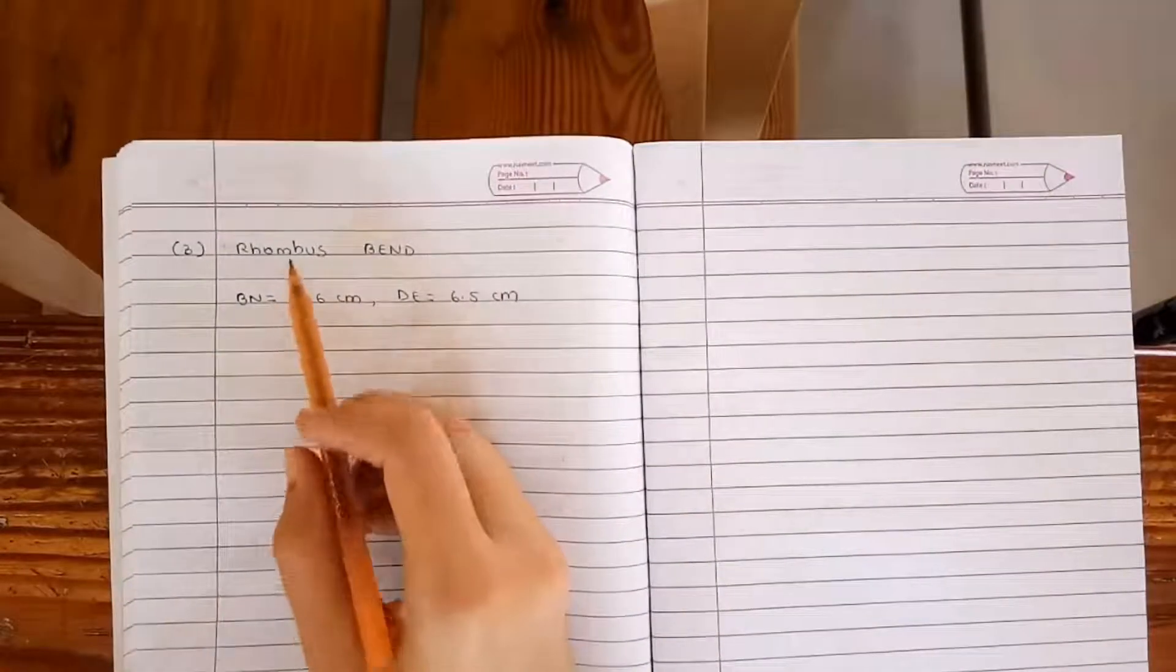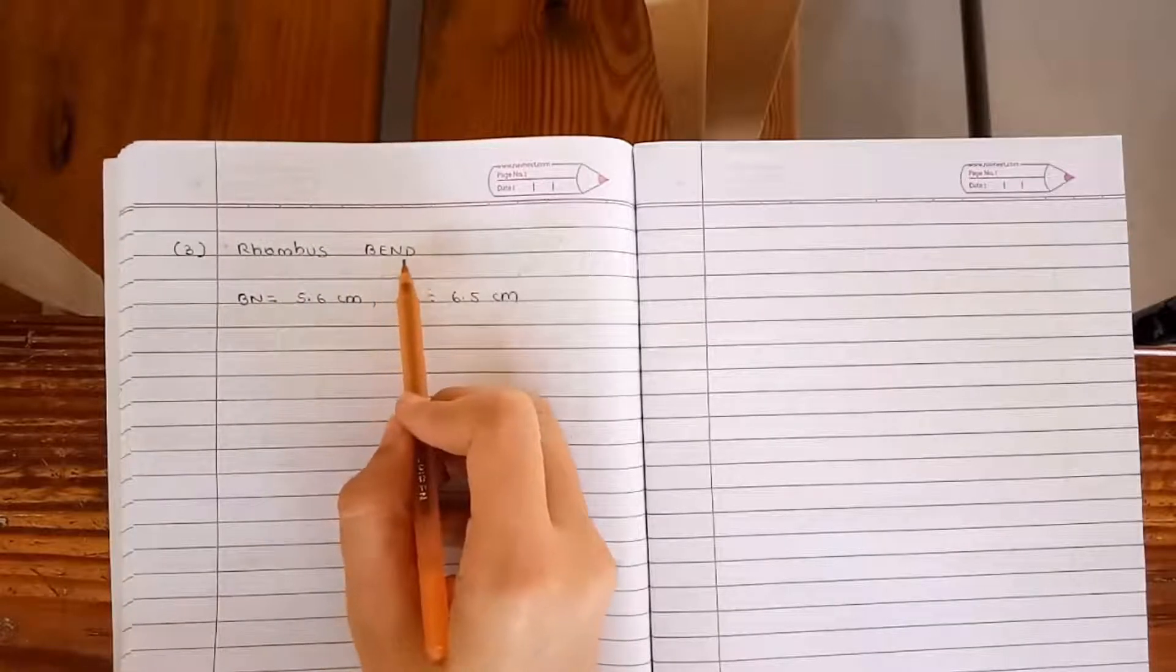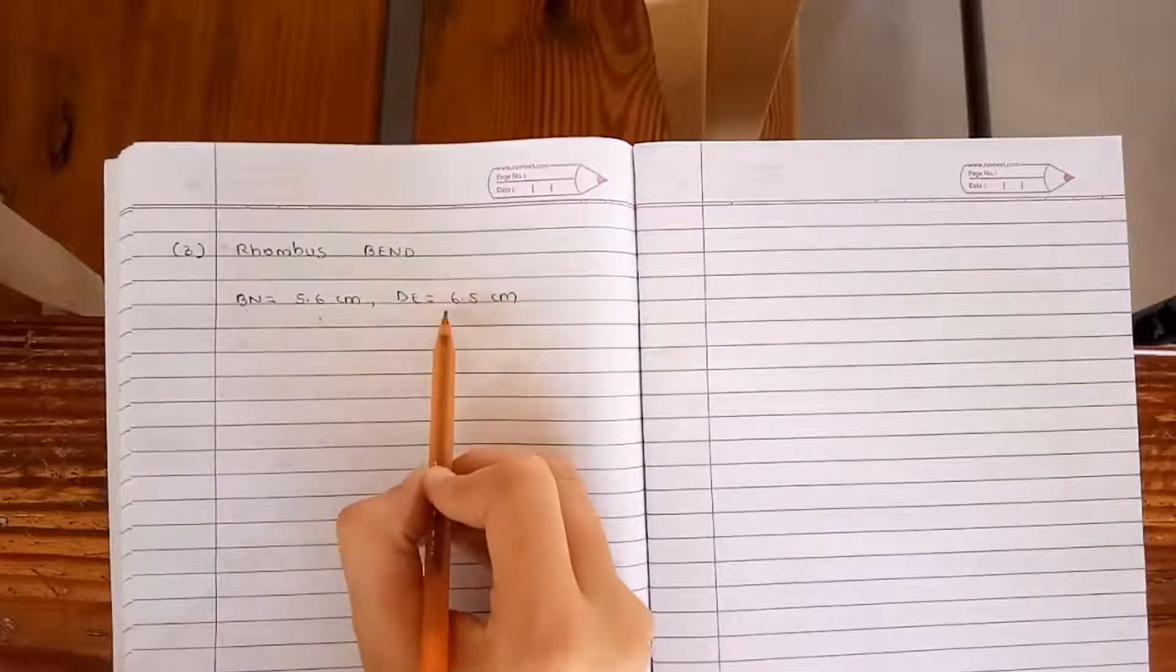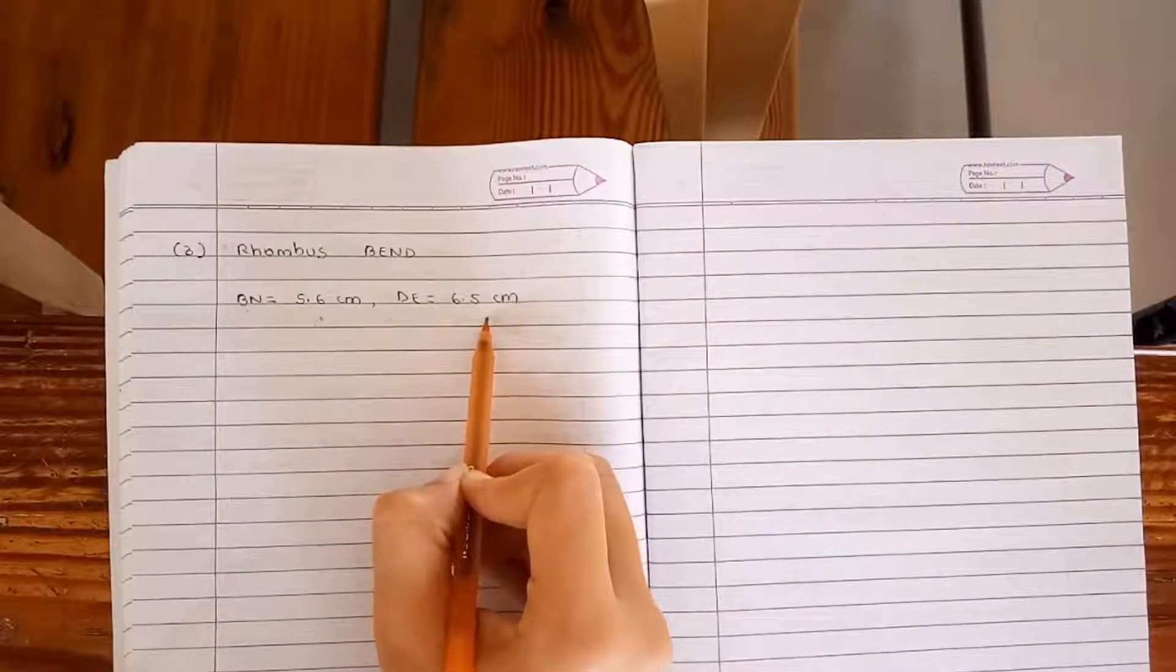Question number 3. Rhombus B, E, N, D. B, N is equal to 5.6 cm. D, E is equal to 6.5 cm.